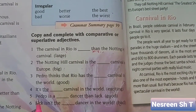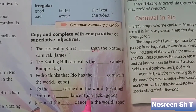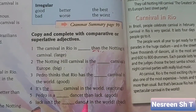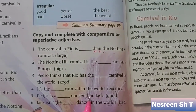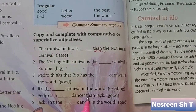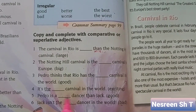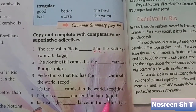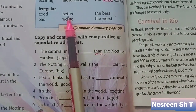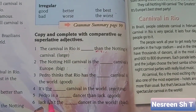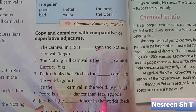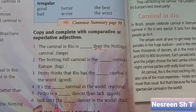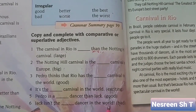Number five: Pedro is a ___ dancer than Jack. We have than, which signals a comparative. The adjective given is good. Good is an irregular adjective; its comparative form is better. Pedro is a better dancer than Jack.